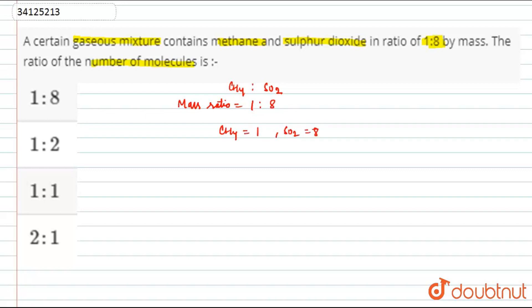We have the ratio of the number of molecules, but this is the mass ratio. Let's calculate the number of moles. The ratio of the number of moles: moles of CH4 is 1 divided by 16. And the number of moles of SO2 is 8 divided by the molar mass of SO2.